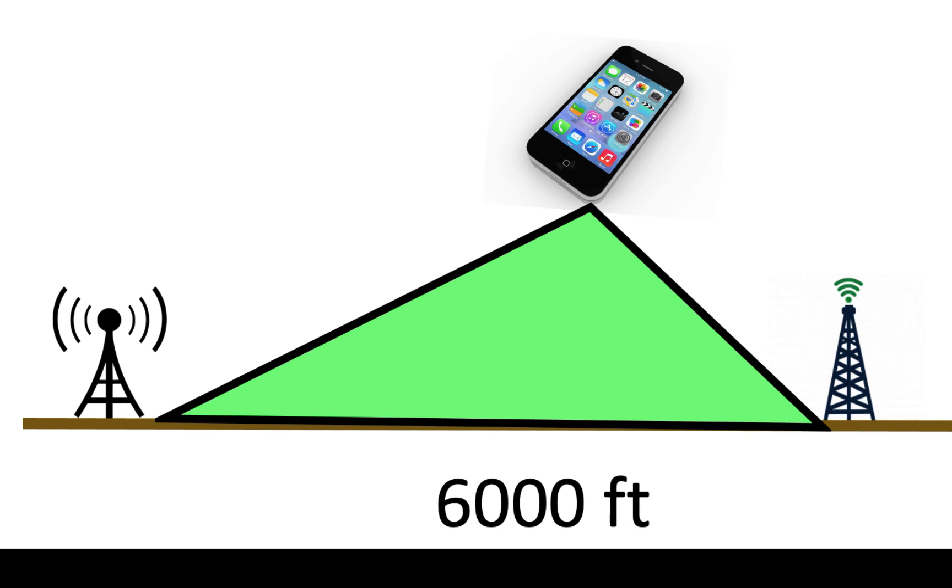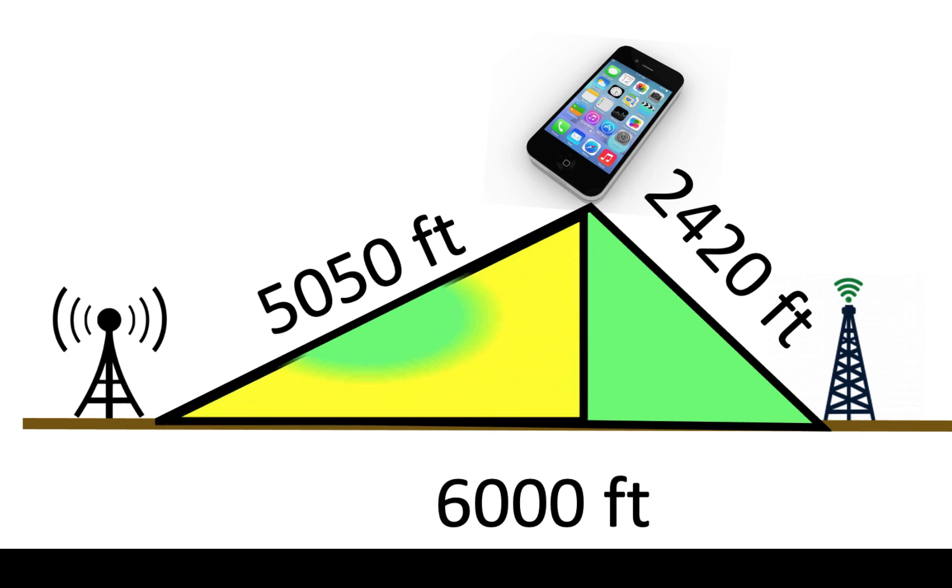Based on the signal delay, it can be determined that the signal is 5,050 feet from the first tower and 2,420 feet from the second tower. Determine the position of the cell phone north and east of the first tower and determine how far it is from the highway.